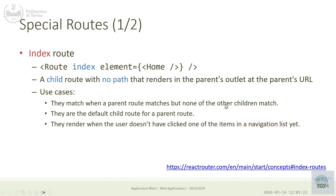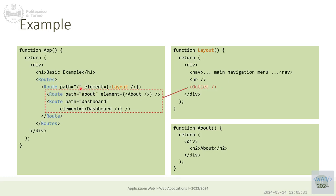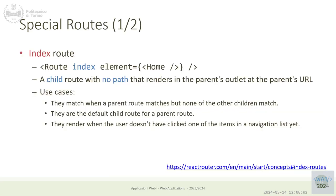There are some special cases for the matching rules. One is the index route: what do we render when the URL is only slash? Slash/about renders Layout with About inside the Outlet, slash/dashboard renders Layout with Dashboard, but slash alone would have Layout with an empty Outlet. The index route (using the 'index' attribute instead of 'path') specifies the default content for that case.